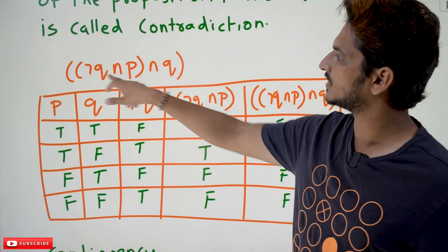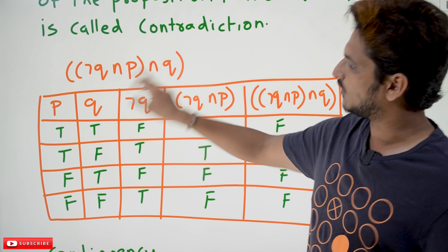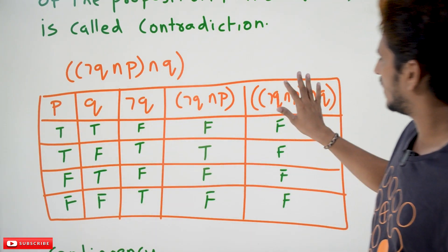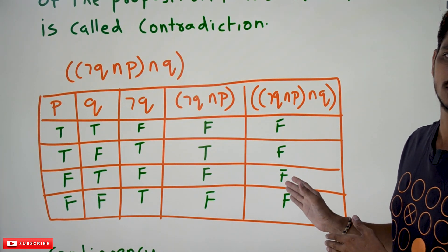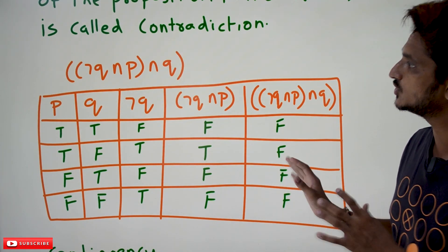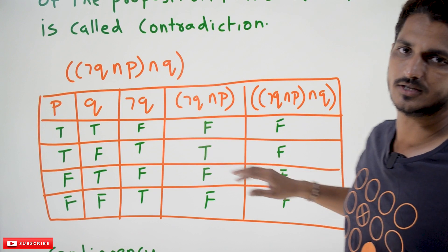Let us take an example. This is the proposition, compound proposition. Whatever the values you consider and construct the truth table, the final value should always be false. Then we say it is a contradiction.